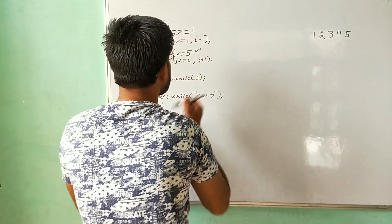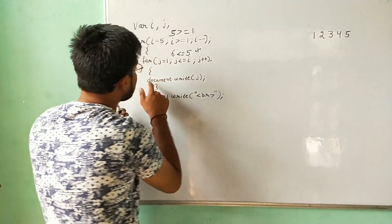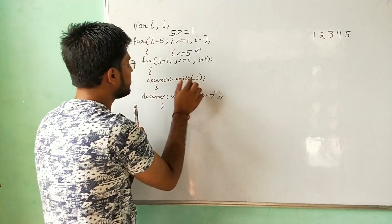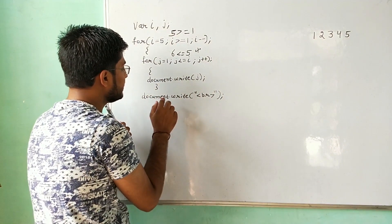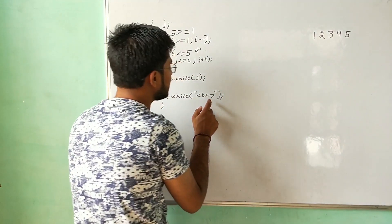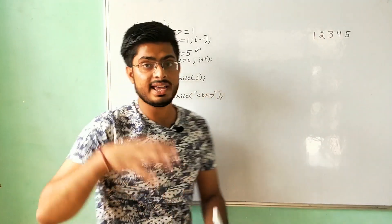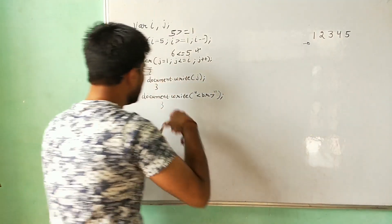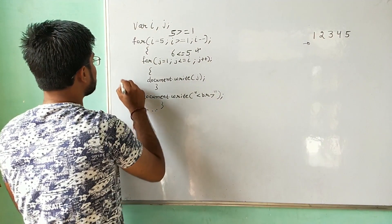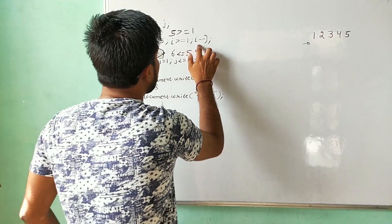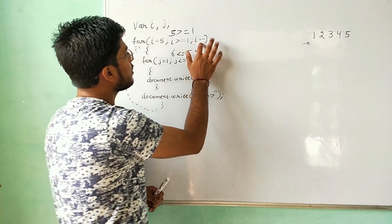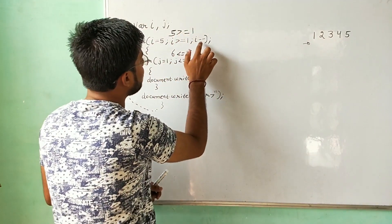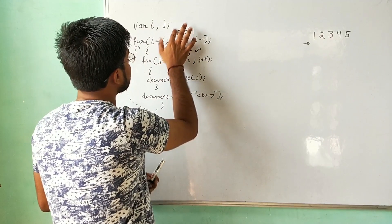Since the condition is false, the inner loop terminates and it will not execute that print statement. Now the loop has been terminated. It goes outside of the loop, where there is a document.write statement with a break tag. The break tag is for the next line, so it will insert a next line here. Then it will go back to the outer for loop, where the decrement operator will decrease the value of i — from five to four.